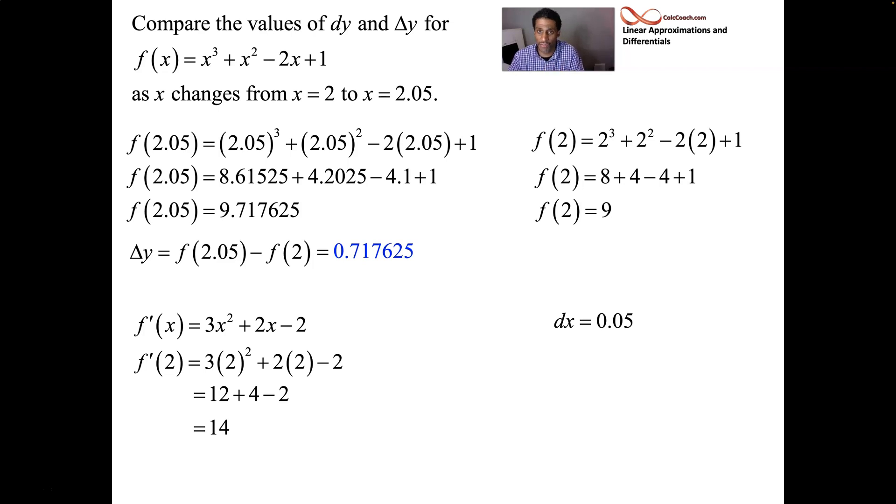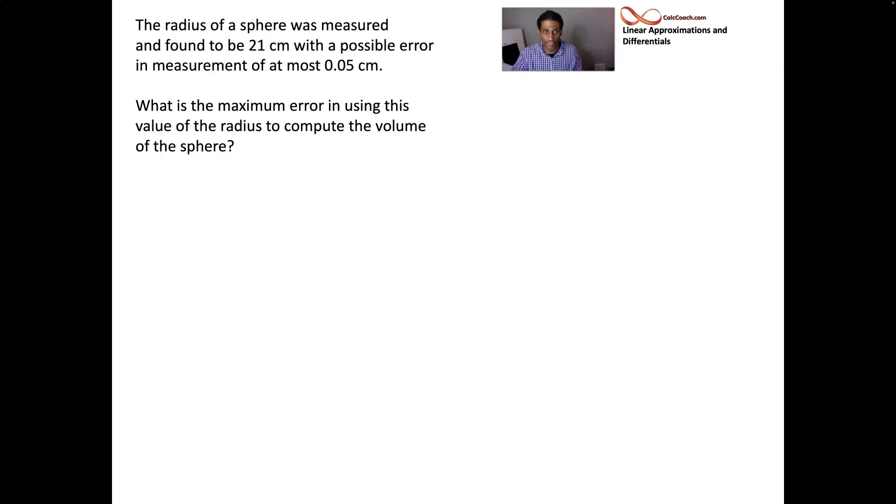So here's what dy is then. Remember, dy is equal to f prime of x dx. So it's going to be the 14, f prime of 2, and then the dx is 1 over 20. 14 over 20, we can reduce that. And that's going to be 7 over 10. So our approximation to what the actual change in the function is, is 0.7. The actual change is 0.717625. And so our approximation to that is 0.7.